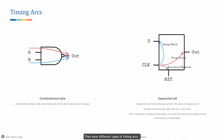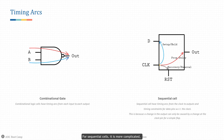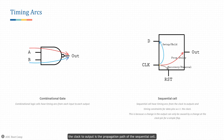They have different types of timing arcs. For a combinational cell such as inverter, buffer, and NAND or gate, the timing arc is simply a connection between each input and its output. For sequential cells it is more complicated — it has clock-to-data arc, clock-to-reset arc, and clock-to-output arc. The clock-to-data arc is where the setup and hold checks come from. The clock-to-output is the propagation path of the sequential cell.